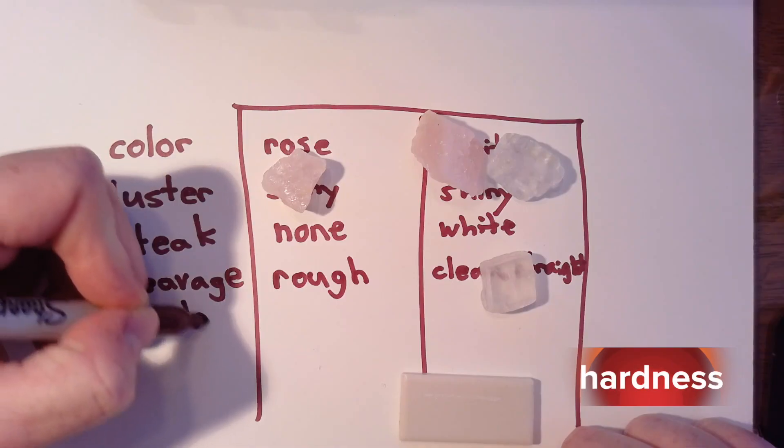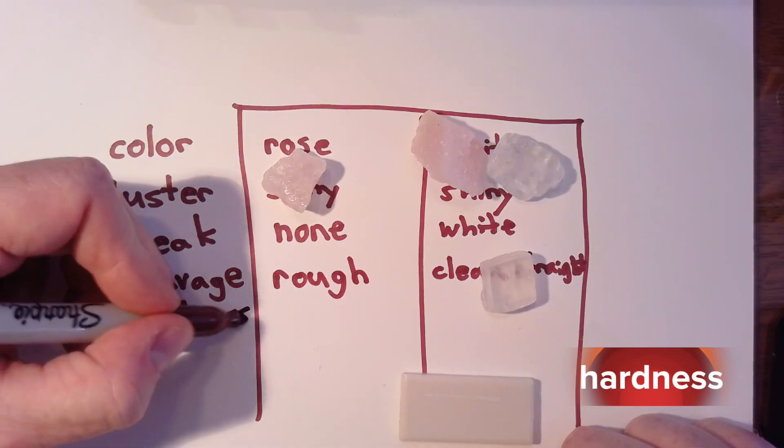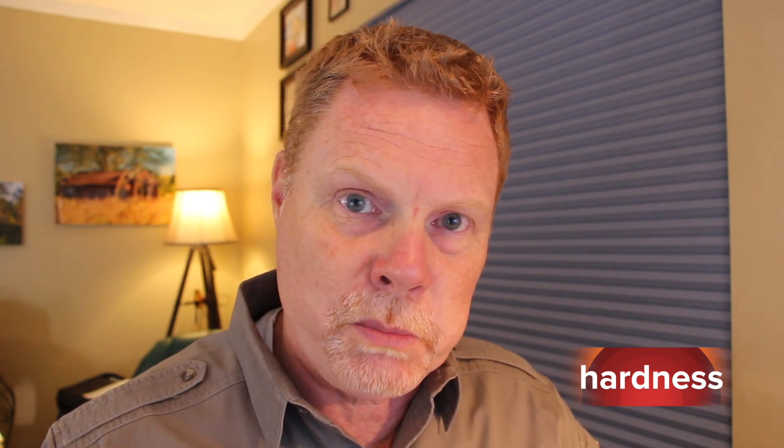The final property I'm going to look at is hardness. Hardness is not about whether minerals break apart when you hit them with a hammer — of course they will. Hardness actually has to do with the scratchability of the minerals — specifically whether minerals will scratch each other and how they scratch each other.